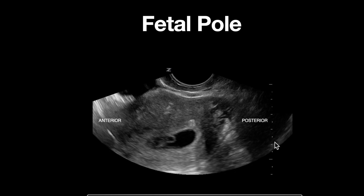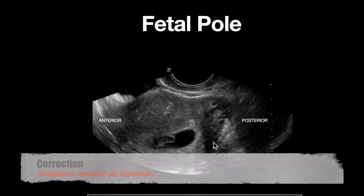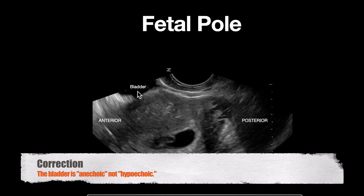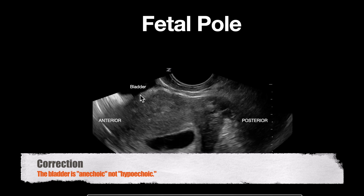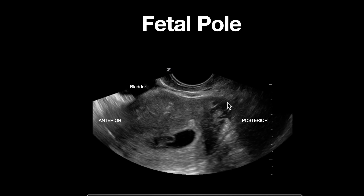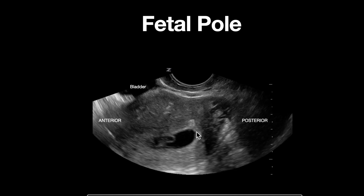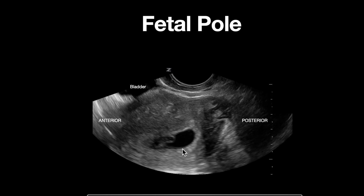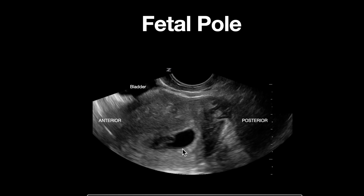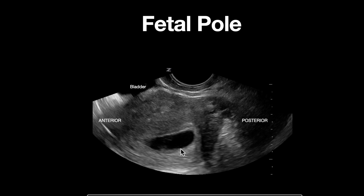Let's look at some important anatomy in this image. At the top of the screen we see a hypoechoic structure consistent with the bladder. The large structure we see here is the uterus. Within the uterus we see our gestational sac. Notice that the gestational sac is fairly central within the uterus, surrounded by plenty of uterine tissue.